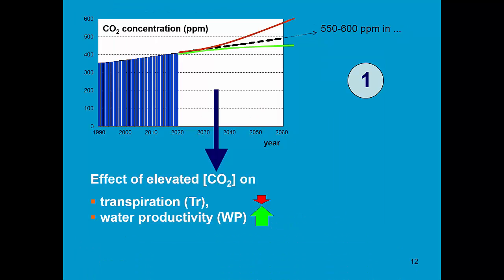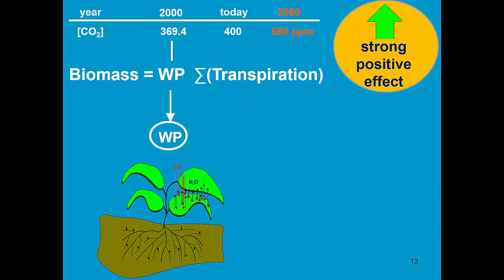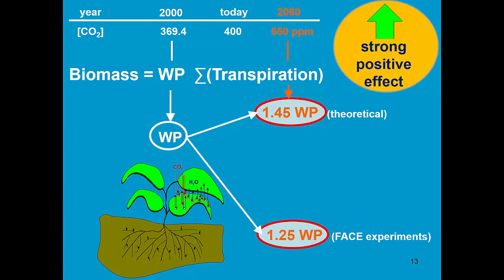That higher CO2 concentration is simulated in AquaCrop by a small decrease of transpiration and a strong increase of water productivity. As such, the increase in CO2 concentration will result in a strong positive effect on biomass production. The adjustment of the biomass water productivity will be about 45% if the CO2 concentration reaches 550 parts per million. From FACE experiments it seems that the increase is only 25%, which may be due to restrictions in FACE experiments such as nitrogen applications and other effects.